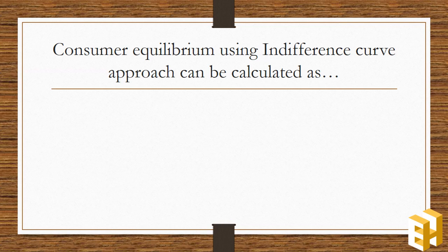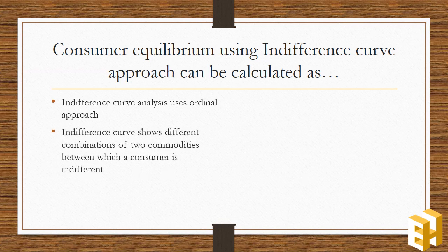We can find out consumer's equilibrium by the technique of indifference curves also. It uses the ordinal approach, the approach of ranking the commodities on the basis of utilities derived from them. Indifference curve shows the different combinations of two goods when consumed by an individual give him same level of satisfaction. Therefore, he is indifferent between all the combinations on the indifference curve.